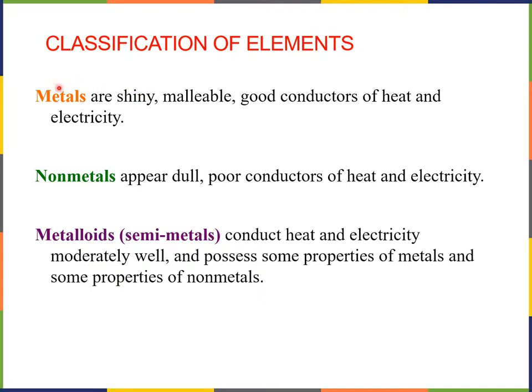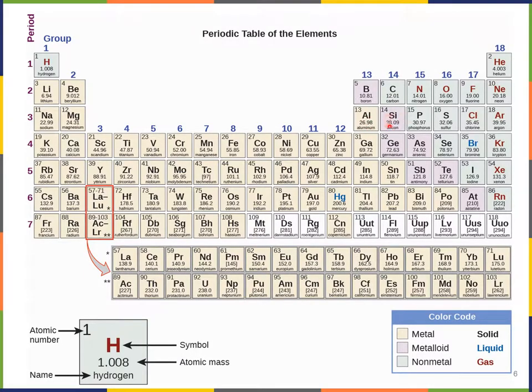Very briefly, metals are shiny, malleable, that means you can pound them into different shapes, and they're good conductors of heat and electricity. Non-metals, in their pure form, generally appear dull and are poor conductors of heat and electricity. Metalloids, which are sometimes called semi-metals, conduct heat and electricity moderately well and possess some properties of metals and some properties of non-metals. For example, silicon is a metalloid and is what is called a semi-conductor. Conducts electricity under some circumstances and not under others, and its properties are harnessed very often in computer chips.